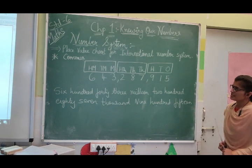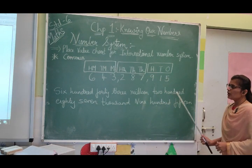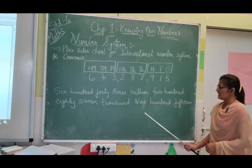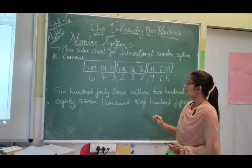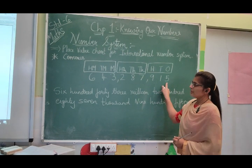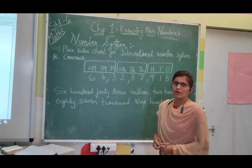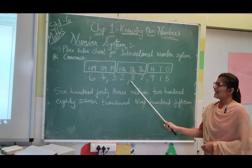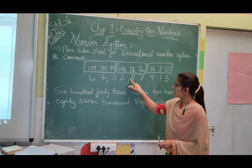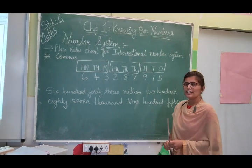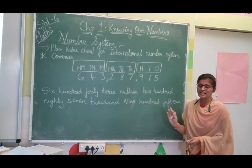In the International number system, the number name is given for 643,287,950. But in the Indian number system, how do we put commas? We first take 3 digits from the right, then give 2, put a comma, then give 2 more and put a comma. So it will be written as 64,32,87,950 — wait, actually 64,00,32,87,950. The key difference: in the International system commas come after every 3 digits (3-3-3), while in Indian it is 3 then groups of 2.